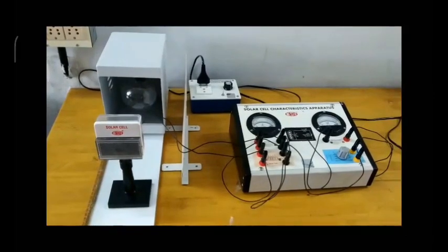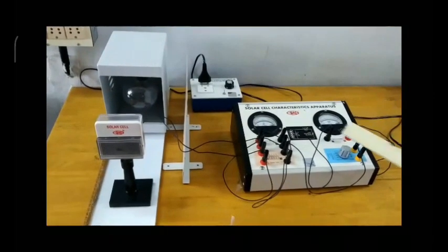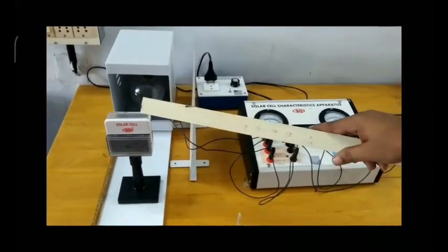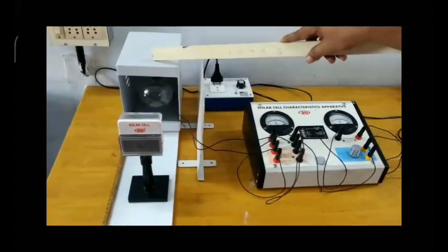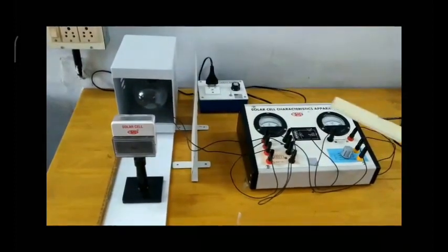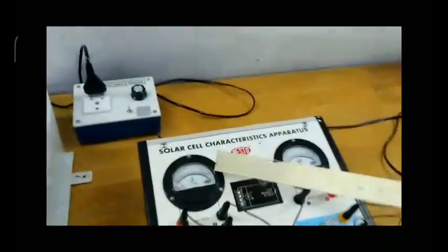This is the solar IV trainer kit. This is the solar cell, and this is actually the light source. There is a voltmeter here in this kit.